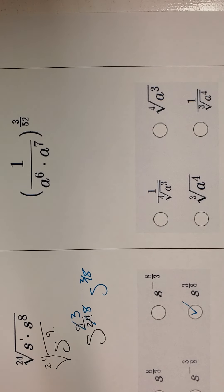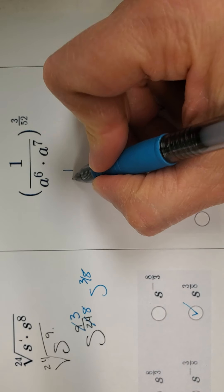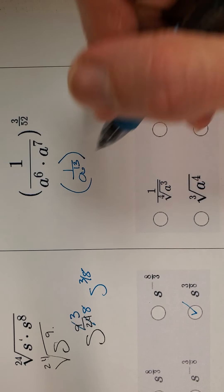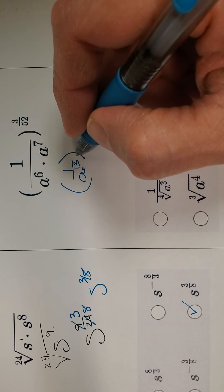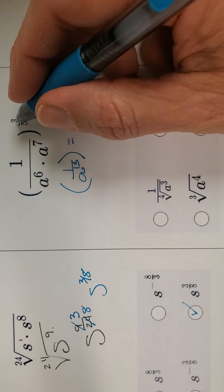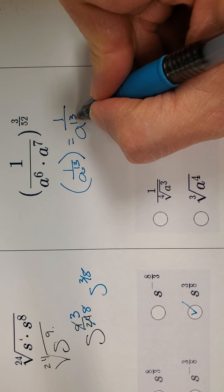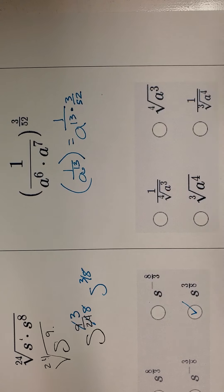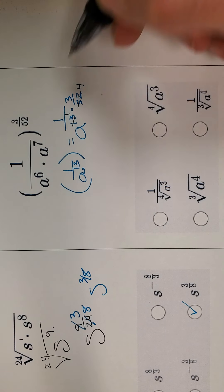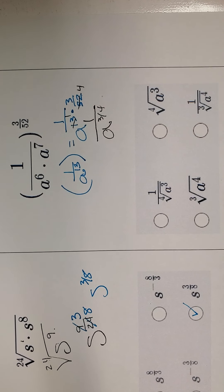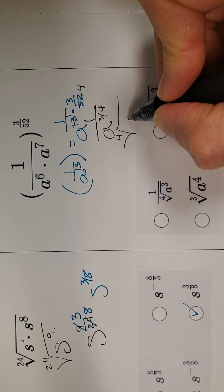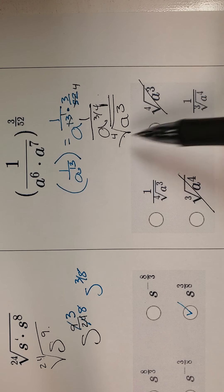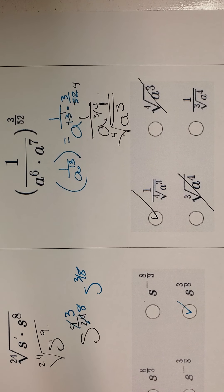This one: I simplify first — it's multiplication, so I add, giving a to the 13. Since it's in the denominator, I'll apply the power rule: 13 times 3 over 52. 13 goes into 52 four times, so I have 3 fourths. So a to the 3 fourths, but I'm in the denominator — index is 4, power is 3. I'm looking for a denominator with index 4, so it has to be that one. Good luck with that — mSquared, signing out.